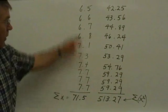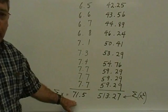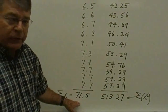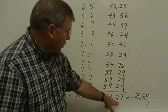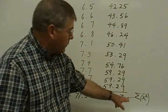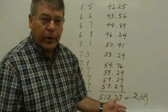Notice over here that we have added the first column, and that number, 71.5, is what we will use as the sum of x. The 513.27 is the number that we will use for the sum of x squared. Now, we'll put those numbers into our formula.